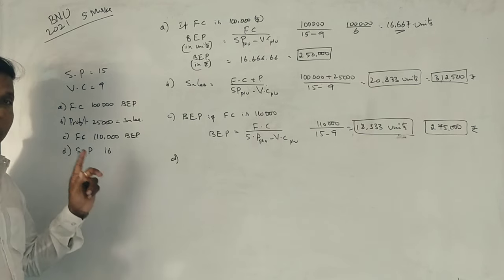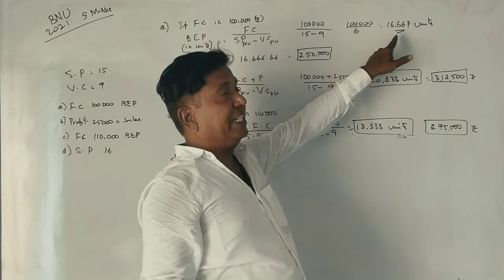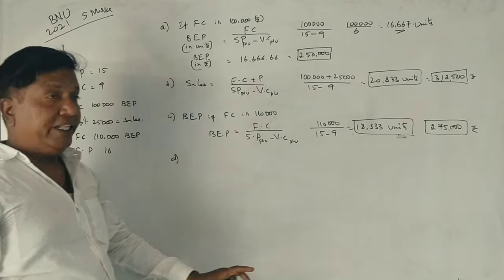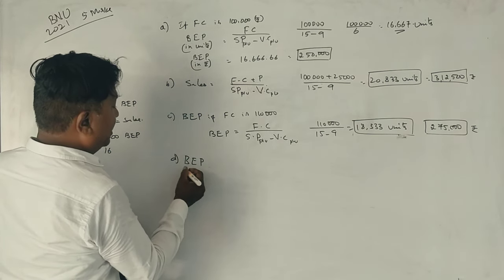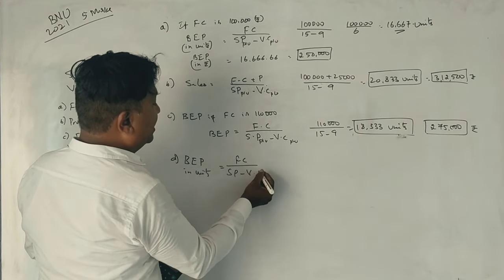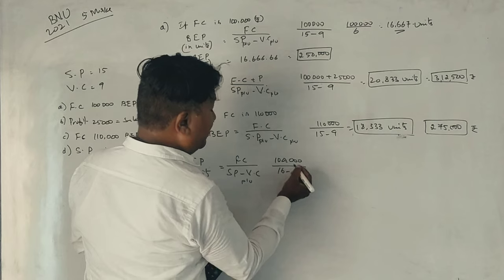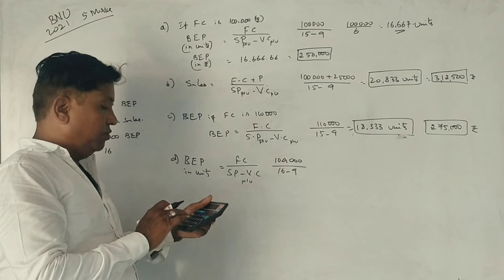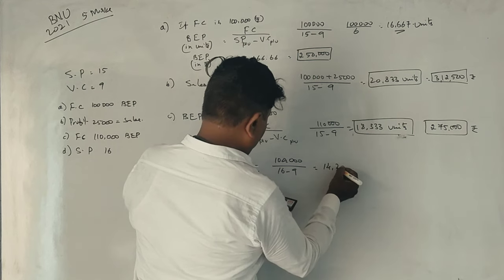Suppose the selling price rises to 16 rupees — what is the break-even point? Break-even point in units equals fixed cost divided by selling price minus variable cost per unit. With fixed cost of 1,00,000 rupees and selling price of 16 rupees, the new contribution is 7 rupees. So, 1,00,000 divided by 7 equals 14,286 units.